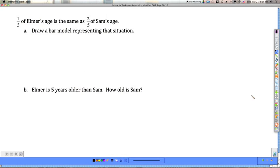And our last problem here. 1/3 of Elmer's age is the same as 2/5 of Sam's age. This looks like it might be kind of an involved problem. But if we take it one step at a time, the bar model really helps us see what's going on.